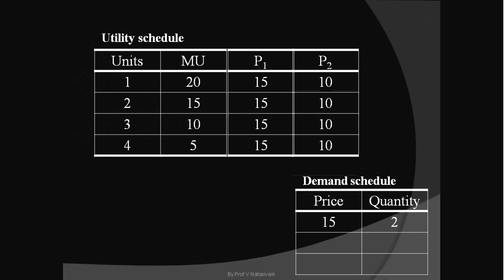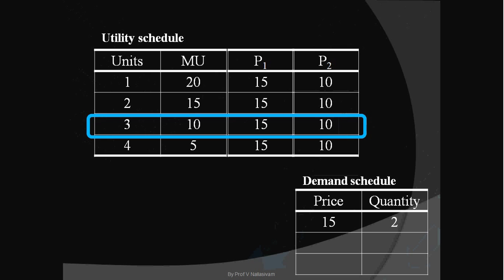Now the consumer's equilibrium is disturbed. His marginal utility is 15 whereas his price is 10. The consumer is not in equilibrium; to establish equilibrium he has to reduce the marginal utility. This is possible only when he increases consumption. He goes for the third unit, equates marginal utility with price, and is in equilibrium. At 10 rupees price, the consumer buys three units.